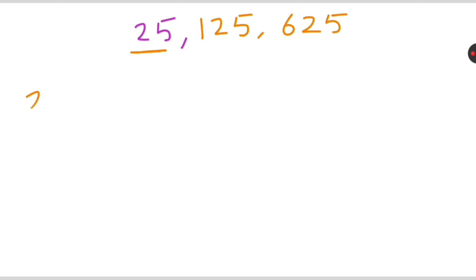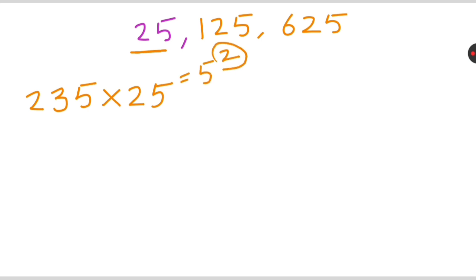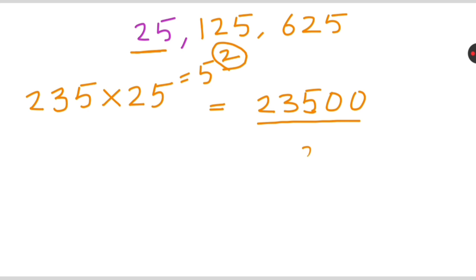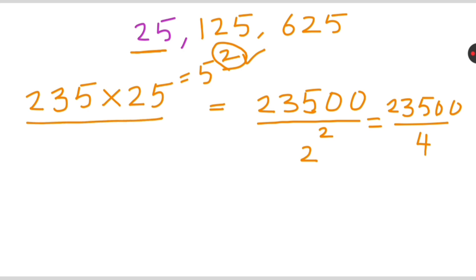Suppose we have the number 235 and we want to multiply by 25. We don't need to multiply directly. Since 25 is 5 raised to 4 of 2, the exponent is 2. The first step is to write two zeros on the right hand side of 235. The second step is to divide by 2 raised to 4 of 2, which is 4. So instead of multiplying by 25, we simply divide 23500 by 4.